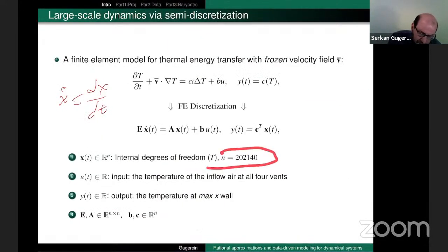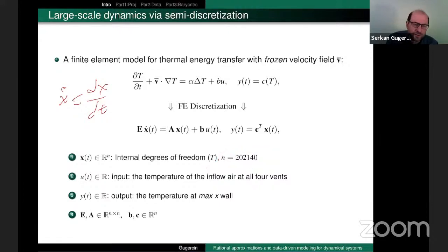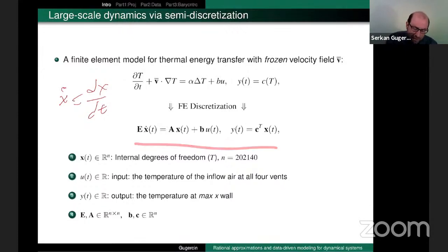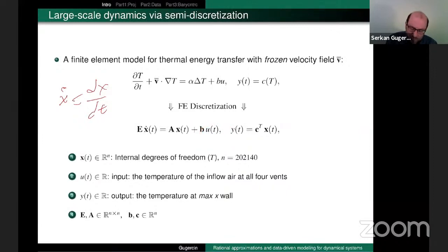So that is the setup. As you can see, this is even a small problem at 200,000 degrees of freedom. In many cases there are systems with millions or even 10 million degrees of freedom. Even for the linear setting, if you have to simulate these things over and over again, this becomes a computational burden.